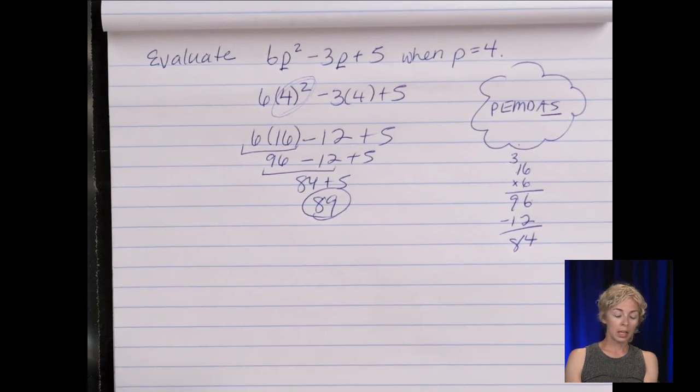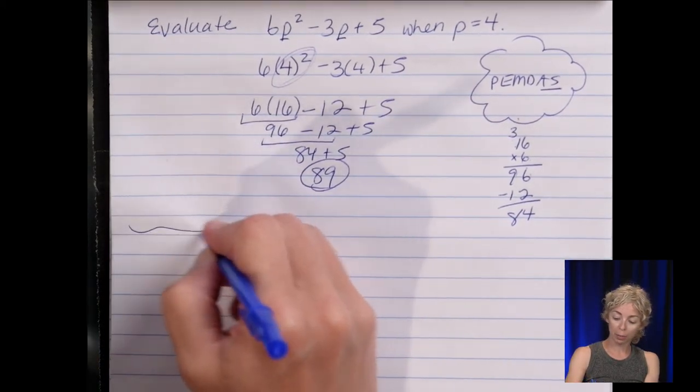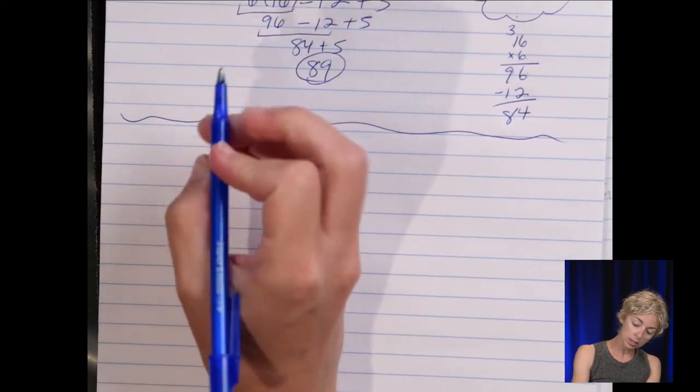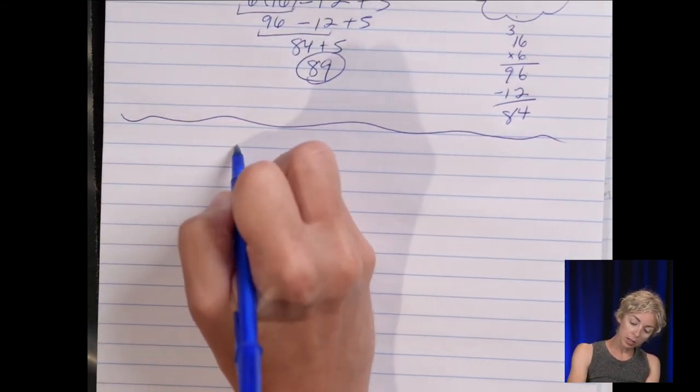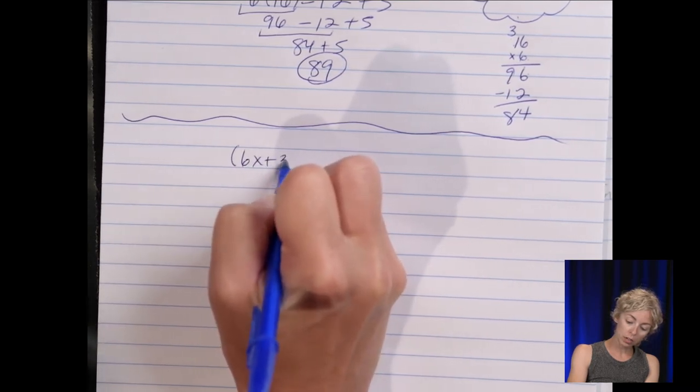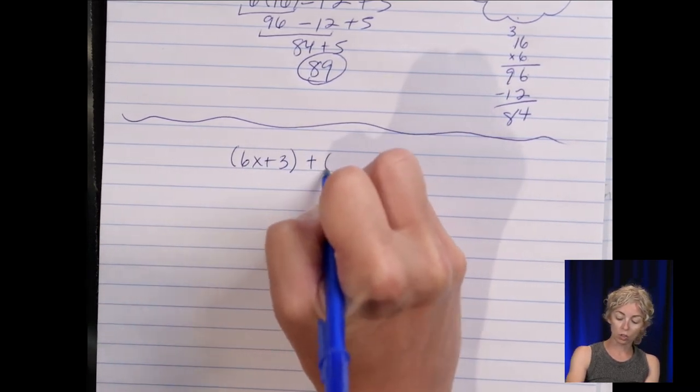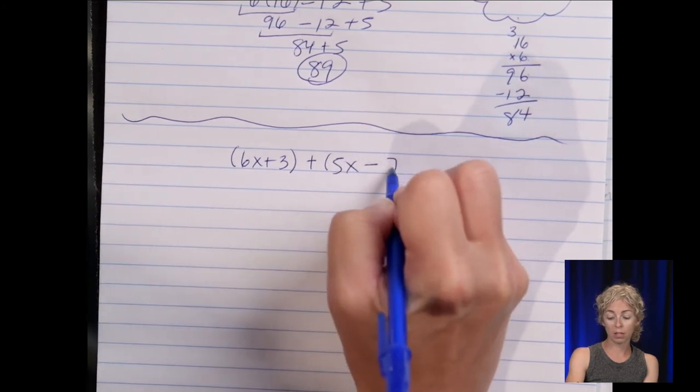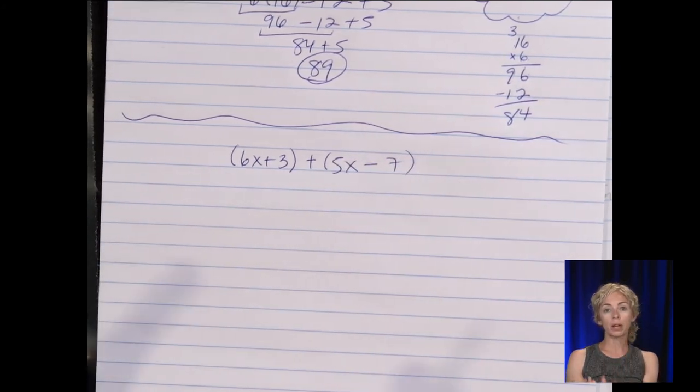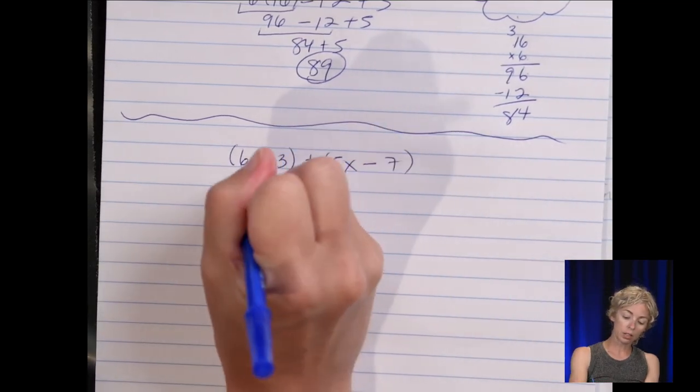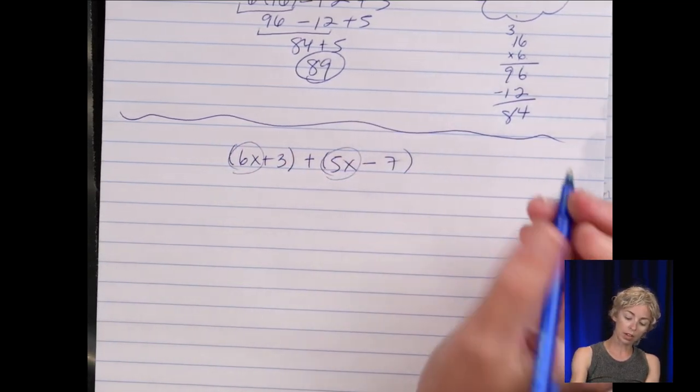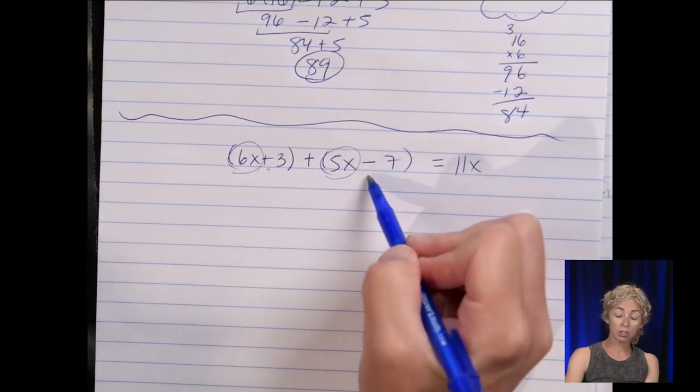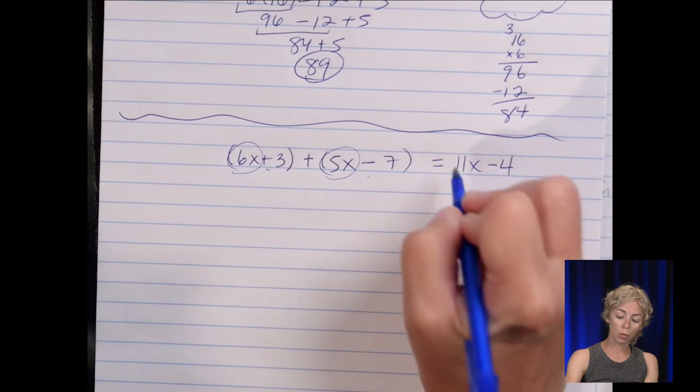Now let's move to operations with polynomials. So let's add let's make it basic six x plus three we're going to add it to five x minus seven. So if I'm adding two binomials I want to add the like term so six x plus five x is eleven x and a positive three added to a negative seven is a negative four.